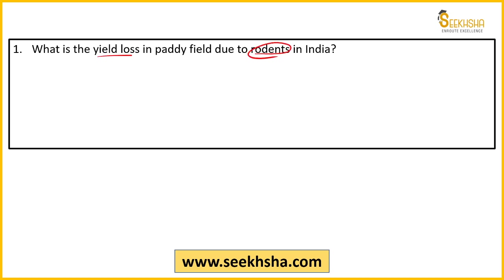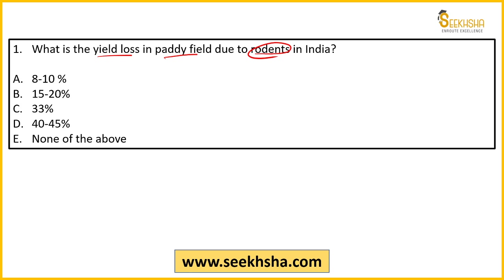First question — simple question: what is the yield loss in paddy fields due to rodents in India? Option A: 8–10%, Option B: 15–20%, Option C: 33%, Option D: 40–45%, Option E: none of the above. It seems simple, but unless you have read about it specifically, it is actually a difficult question because this kind of detail is not found in every book. The right answer is Option A — 8–10%.